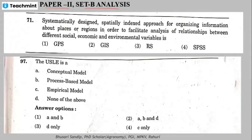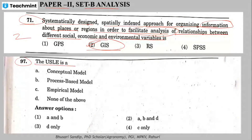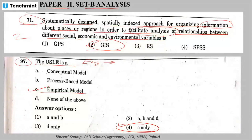Question 71: blank is a systematically designed, specially indexed approach for organizing information about places or regions in order to facilitate analysis of relationships between different social, economic, and environmental variables — the answer is GIS. Question 97: the Universal Soil Loss Equation — USLE — is an empirical model used in precision farming and engineering.